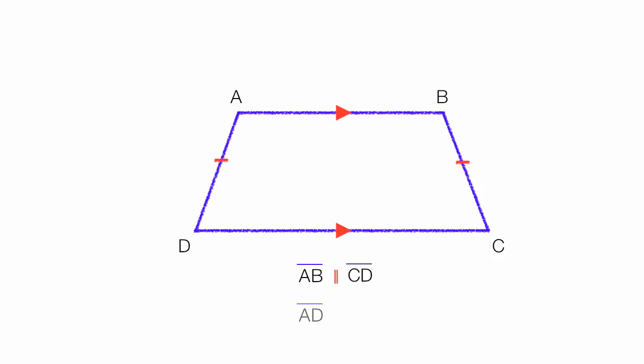Now, if I mark them with a little hash, that means that they're congruent. So line AD is congruent to line BC. Notice that little symbol between means congruent.